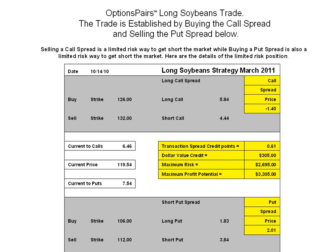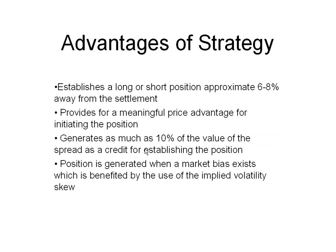In the last example, we're going to do soybeans — a long position. The current price is $119.54. We're going to buy the call spread and sell the put spread, and we're going to take in a $305 credit on about a $3,000 position. Maximum risk is $26.95 and maximum profit potential is $3,305. Again, because of the structure of the skew, you can put on this position with approximately a 10% advantage in all of these trades. If we don't go outside of the parameters, then you make money.